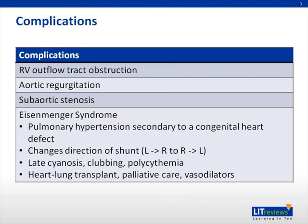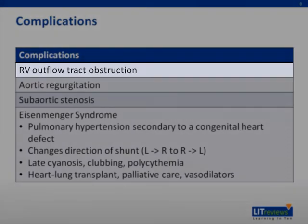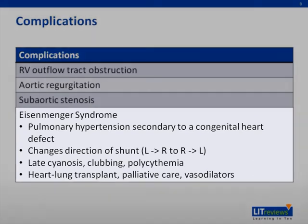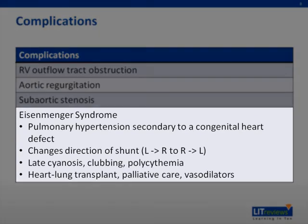VSDs can lead to several cardiac complications, including right ventricular outflow tract obstruction, aortic regurgitation, and subaortic stenosis. However, the important complication to learn is Eisenmenger syndrome. The increased volume of blood received by the lungs causes increased pulmonary pressure and increased pulmonary vascular resistance. Eventually, the resistance in the lungs overcomes the resistance in the aorta, leading to a reversal in the direction of the shunt — blood now flows from the right heart to the left, leading to late cyanosis. This pulmonary hypertension in the setting of a congenital heart defect is Eisenmenger syndrome. Until recently, treatment was limited to heart-lung transplants and palliative care. However, vasodilators approved for idiopathic pulmonary hypertension have been shown to improve symptoms in Eisenmenger syndrome and have been recommended as part of patient management.